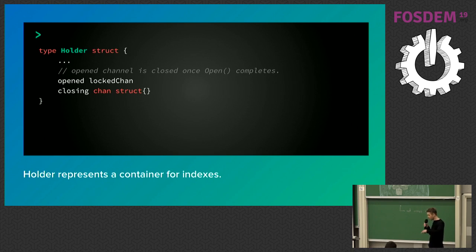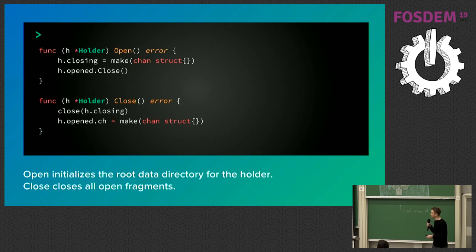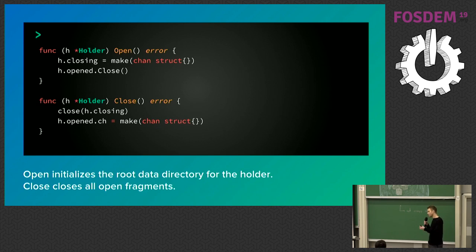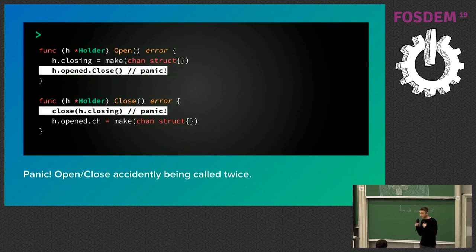Looking closely at how the holder was implemented, we found it contained two channels — open and closing — used only in the open and close functions. It closes the open channel in open, and the closing channel in close. This means in a concurrent world, you could try to open an already-open file or close an already-closed file — and instead of returning an error or doing nothing, it panics. Please don't do this — it's bad.